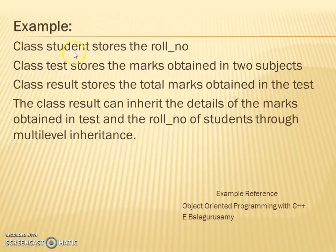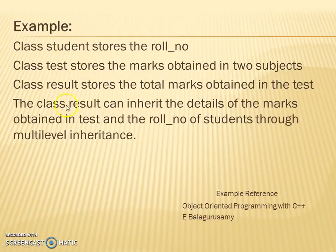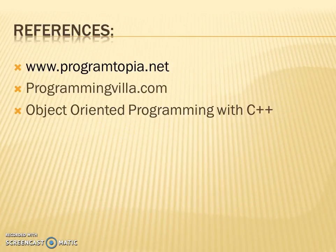As another example: class student stores the roll number, class test stores the marks obtained in two subjects, and class result stores the total marks obtained. The class result inherits the marks obtained in the test and the roll number of the student through multilevel inheritance. References are as given on the screen.